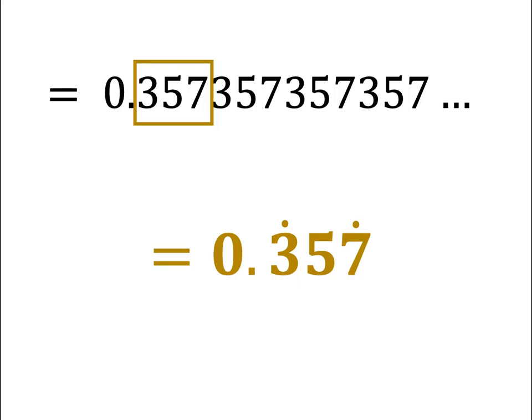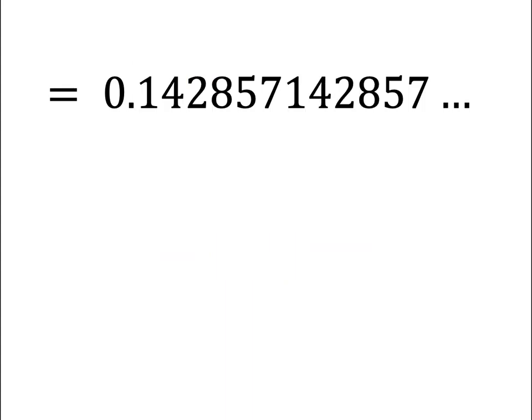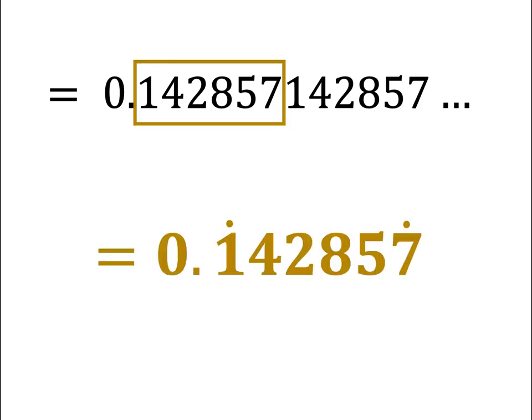Last one. What about this value? Like in the previous question, the decimals that are repeating are 142857, so we place a dot above the start and the end of the repeating values.